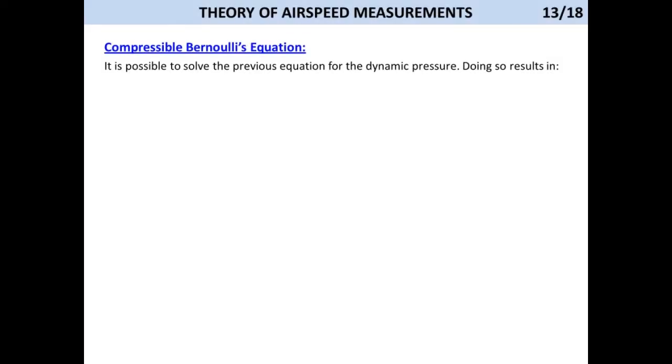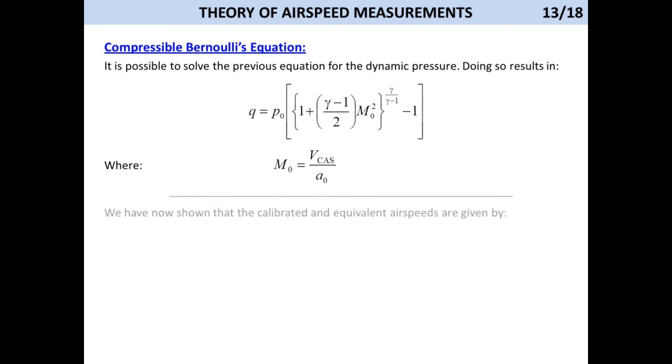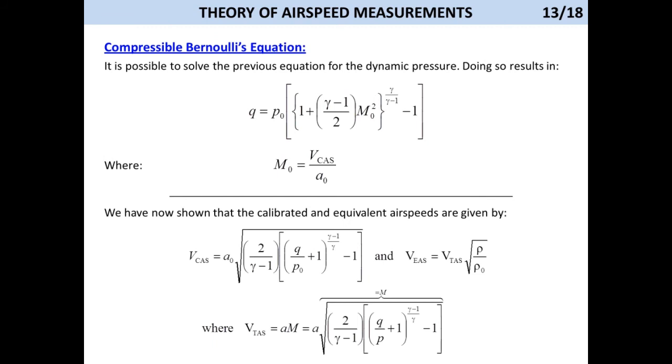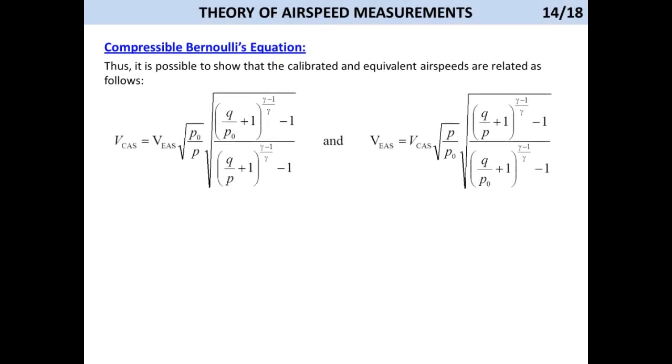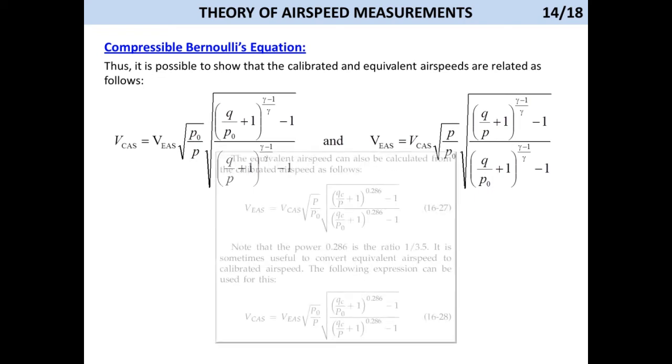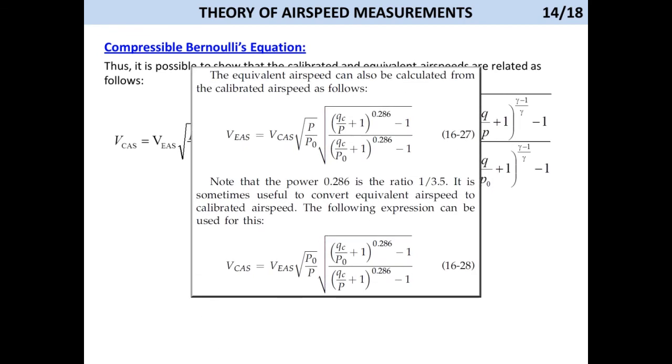It is possible to solve the previous equation for the dynamic pressure. Doing so results in... Where M0 is the Mach number at sea level. We have now shown that the calibrated and equivalent airspeeds are given by... Thus, it is possible to show that the calibrated and equivalent airspeeds are related as follows. These are equations 1627 and 1628 in my book.